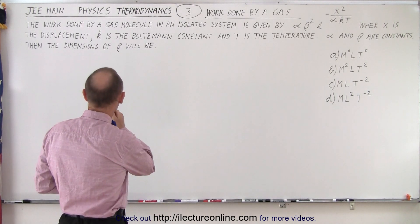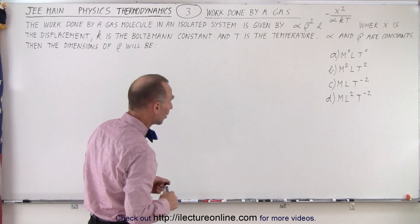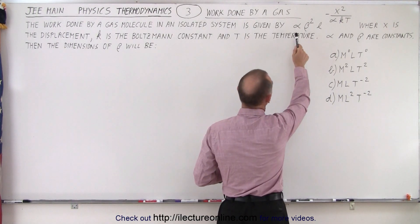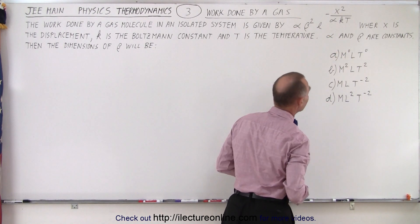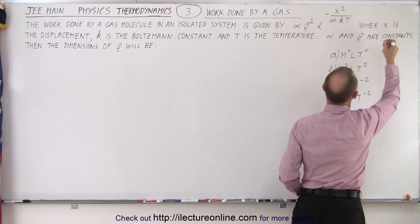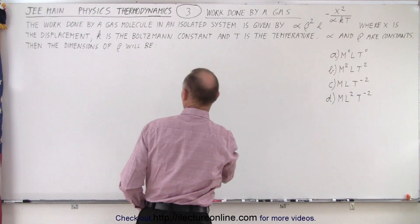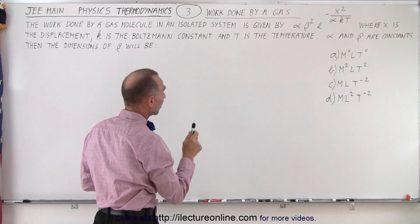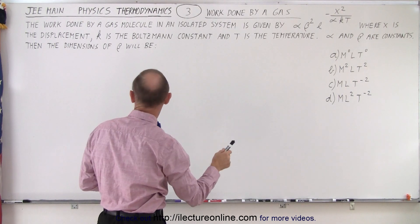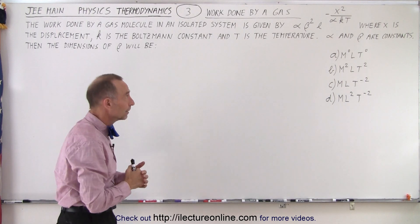It says the work done by a gas molecule in an isolated system is given by the following equation, that the work is equal to alpha beta squared e to the minus x squared over alpha kt, where, and I'm missing an e here, there we go, where x is the displacement, k is the Boltzmann constant, and t is the temperature. Alpha and beta are constants, then the dimensions of beta will be. So we're trying to find the dimensions of beta.